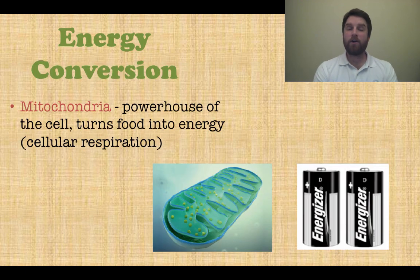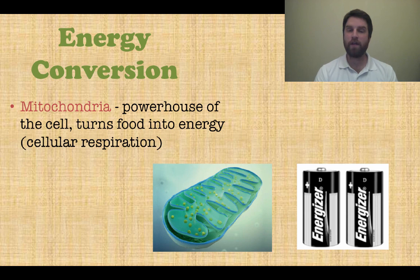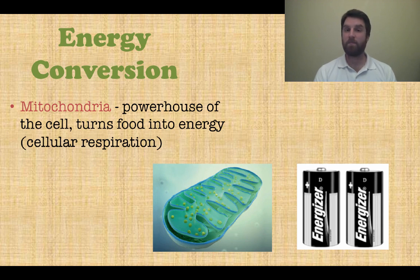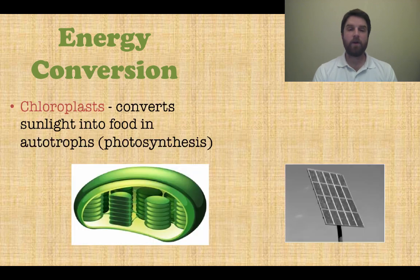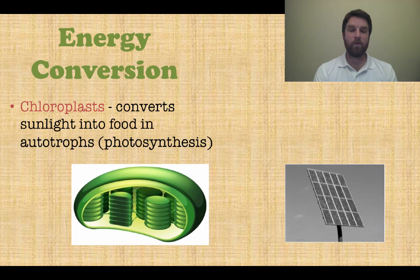Finally, we have energy conversion. Many cells have mitochondria, called the powerhouse of the cell, because they turn food into energy — these are your heterotrophs, using cellular respiration to give the cell energy from the food it eats; think of these like batteries. We also have chloroplasts, which in autotrophs use sunlight and carbon dioxide to make food through the process of photosynthesis — these are like the solar cells within a cell.